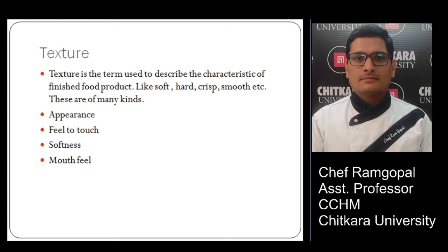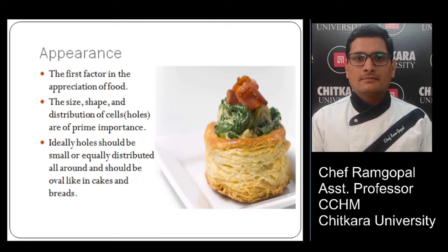The first type is appearance — the first factor in the appreciation of food. Whenever a guest is having food, they first eat with their eyes. The size, shape, and distribution of cells are prime factors in the appearance of a dish. Ideally, holes should be small and equally distributed, and should be oval-like in cakes and breads. As you see in the picture, the holes are evenly distributed all around, so it looks very nice and shiny.